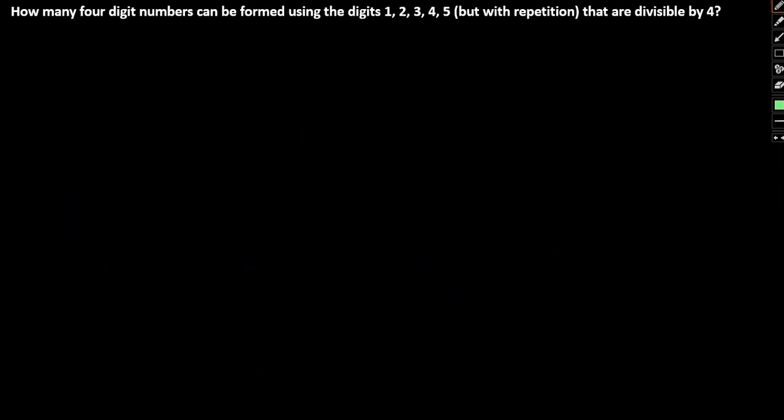The third question is also a very interesting question. How many four digit numbers can be formed using the digits 1, 2, 3, 4 and 5, but without repetitions, that are divisible by 4? One thing that we should keep in mind for any digit or any number to be divisible by 4. So if we consider the digits 1, 2, 3, 4, 5, we need to form a four digit number right? So how many numbers among this are a multiple of 4?